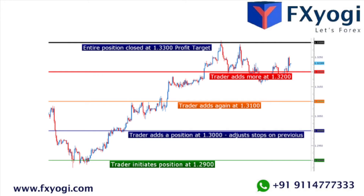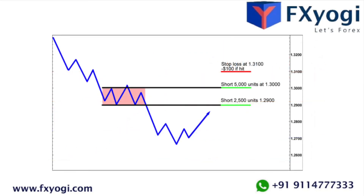Short 5000 units of EUR/USD at 1.3000. Again, according to our pip value calculator, 5000 units of EUR/USD means your value per pip movement is $0.50. With your stop loss at 1.3100, you have a 100 pip stop on this position, and if it hits your stop, that is a $50 loss — value per pip movement $0.50.